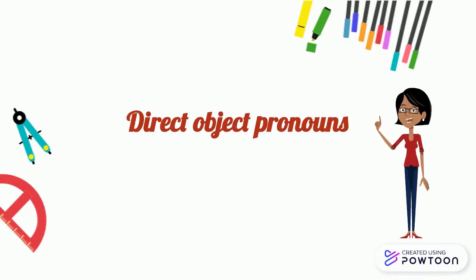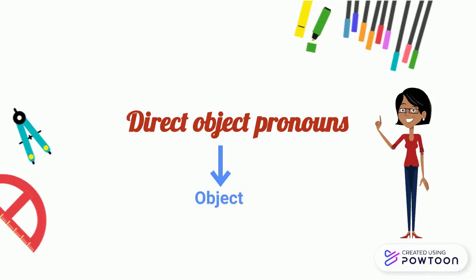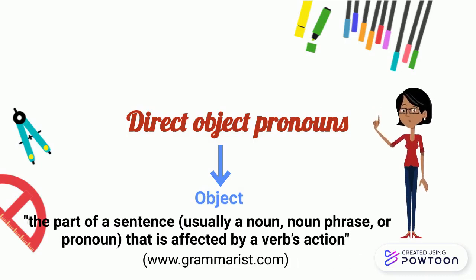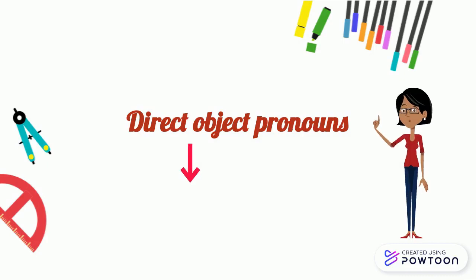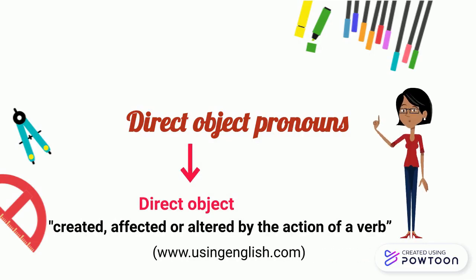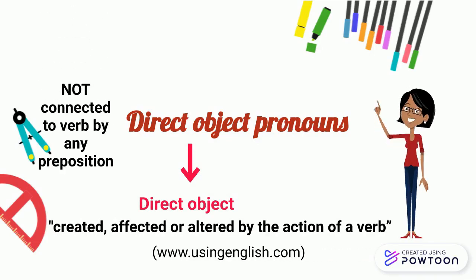Let's do some unpacking of the title and start with object. It is the part of a sentence, usually a noun, noun phrase or pronoun that is affected by a verb's action. Then we have direct object. It is created, affected or altered by the action of a verb. It is called direct because it is not connected to the verb by any preposition.